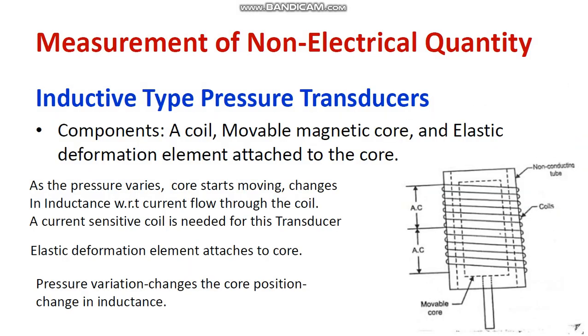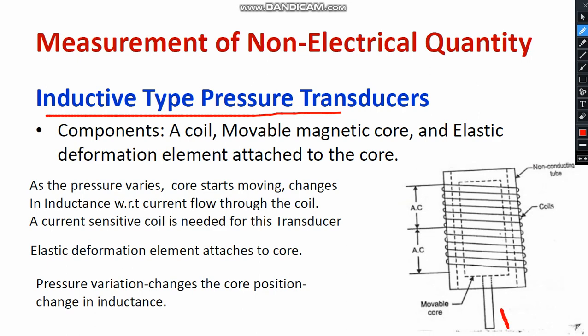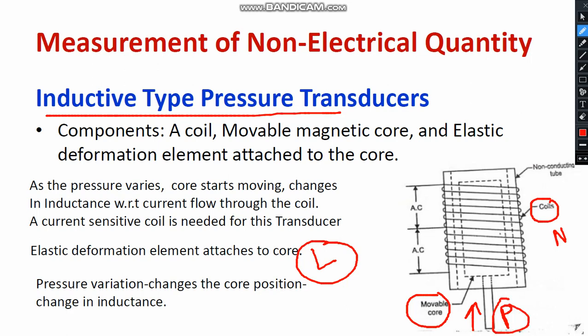Next, I would like to discuss the inductive type pressure transducer. You can see a pressure element where pressure is applied with respect to a shaft, and there are coils with n number of turns. There is a movable core connected to the shaft. With respect to the shaft movement, the core position is varied and the winding is provided accordingly. So when pressure is applied externally, the position of the core changes, and whenever core position changes, the inductance L also changes. The change in inductance is directly proportional to the pressure.